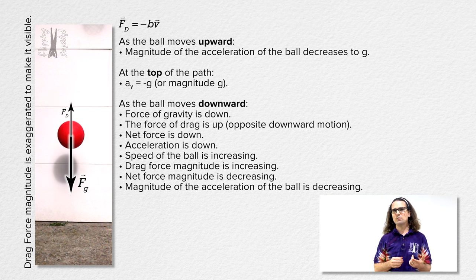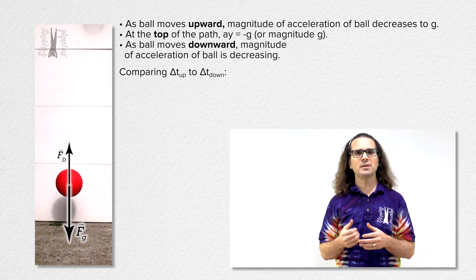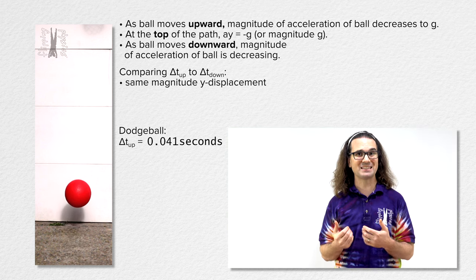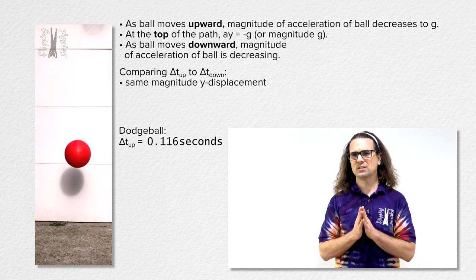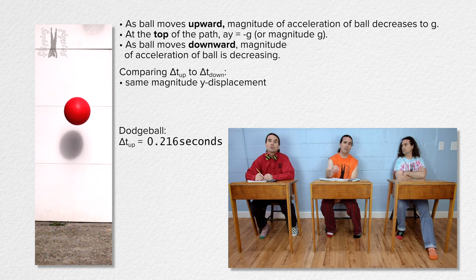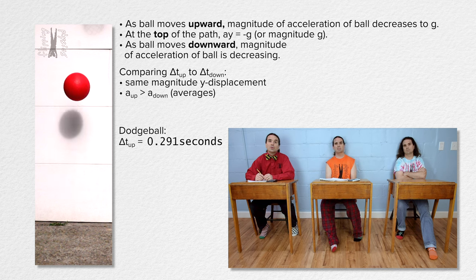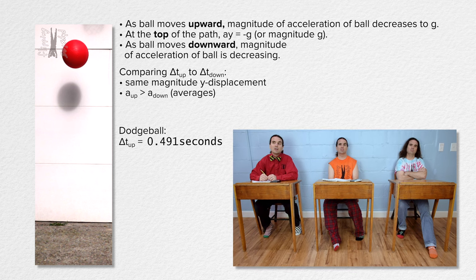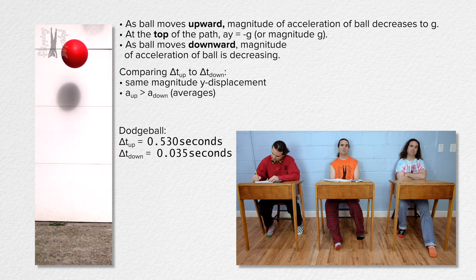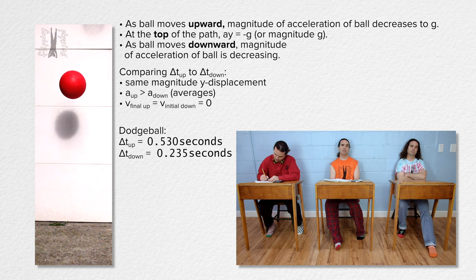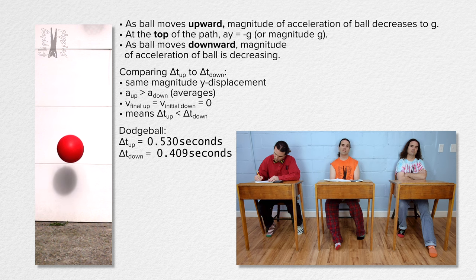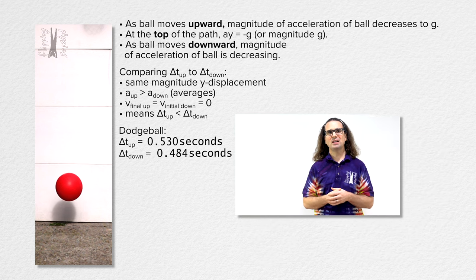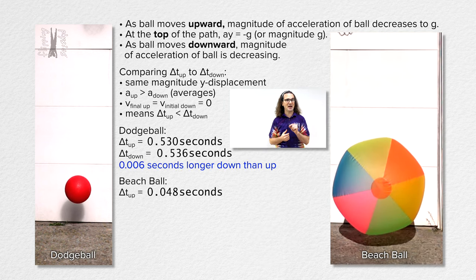What about the time while moving up compared to the time while moving down? We know the displacement in the y direction has the same magnitude because it starts and ends at the same height. The average acceleration on the way up has a larger magnitude than the average acceleration on the way down. Since both going up and coming down have an initial or final velocity equal to zero, a larger magnitude acceleration means a smaller change in time — it should take less time on the way up than on the way down. For the dodgeball, the difference amounts to only roughly six thousandths of a second.